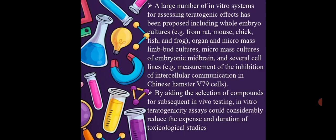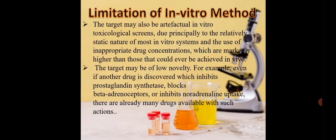A large number of in vitro systems are being used including the whole embryo culture, like of the rat, mouse, chick, fish and all of this. Microculture is being used. Embryonic midbrain of several cell linings are also being used for the testing in this section. And by the selection of in vivo testing, we need to look for the in vitro teratogenicity. Now, teratogenicity would be a very new word to all of you. I would really like you to go to Google and ask what is teratogenicity if you don't know. This is very exciting. This is a kind of toxicity.